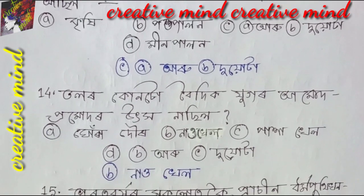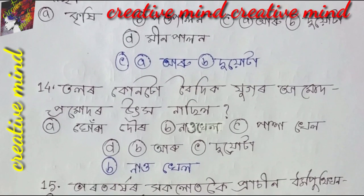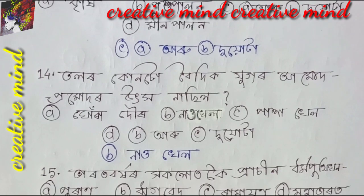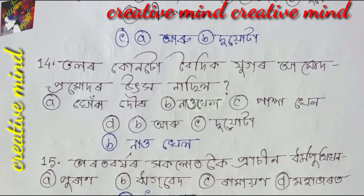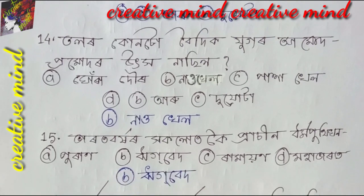Question number 15: Pahadbrakho Chokolotkoi Prashin Dharmaputik Han. Option A: Puraan. Option B: Rigbed. Option C: Ramayan. Option D: Mohabarat. Yarekhu Dota to hoi se. Option B: Rigbed.